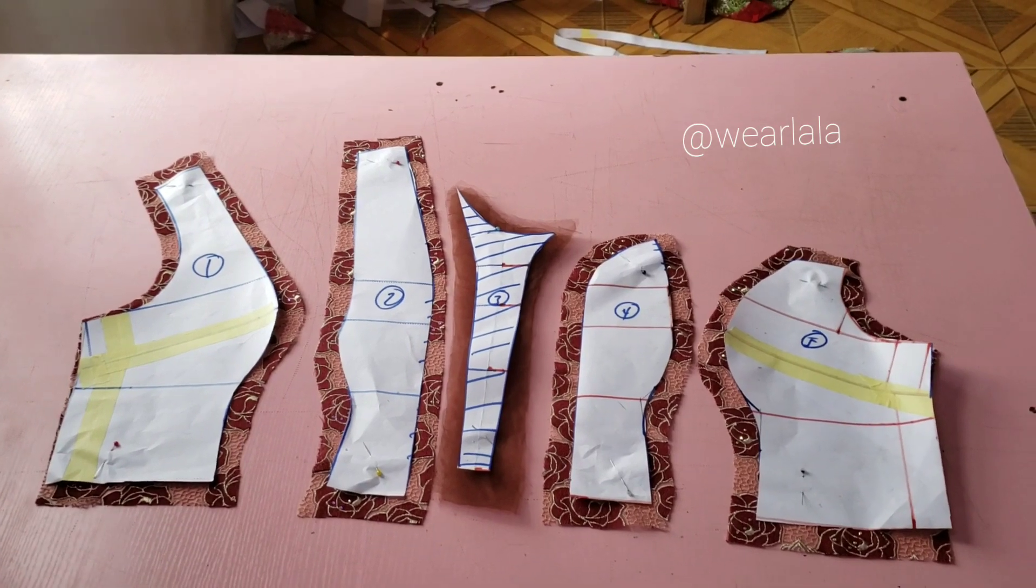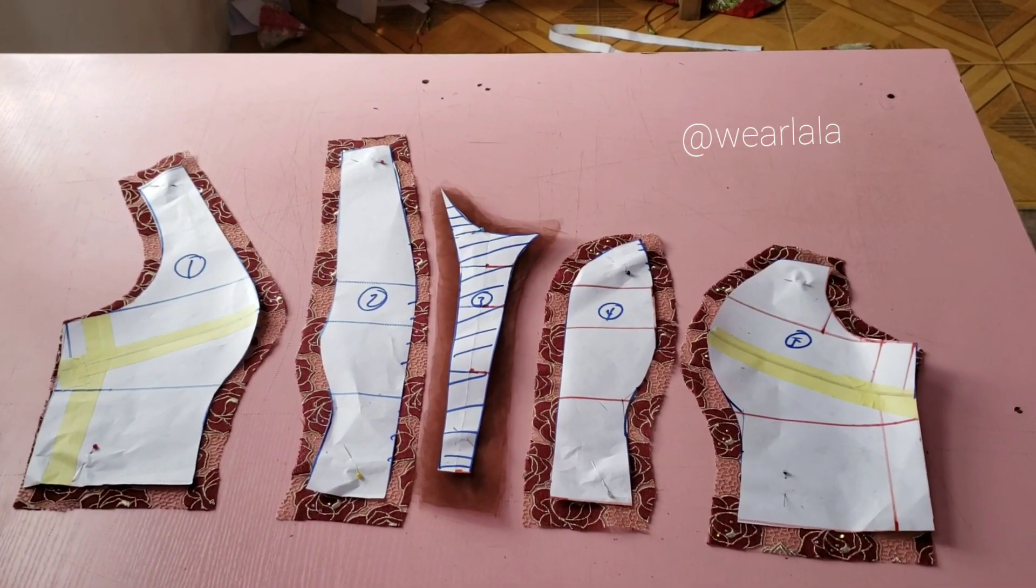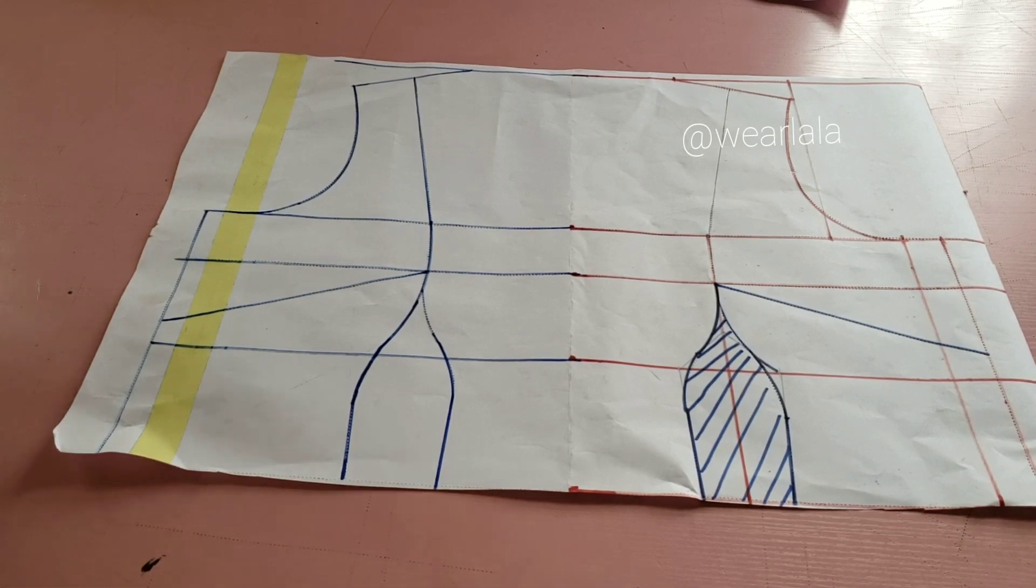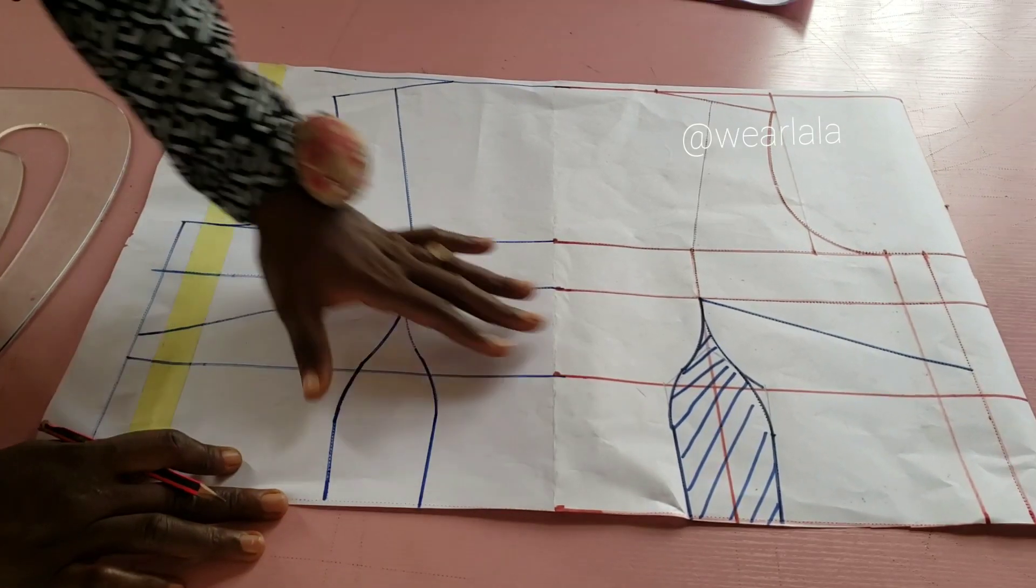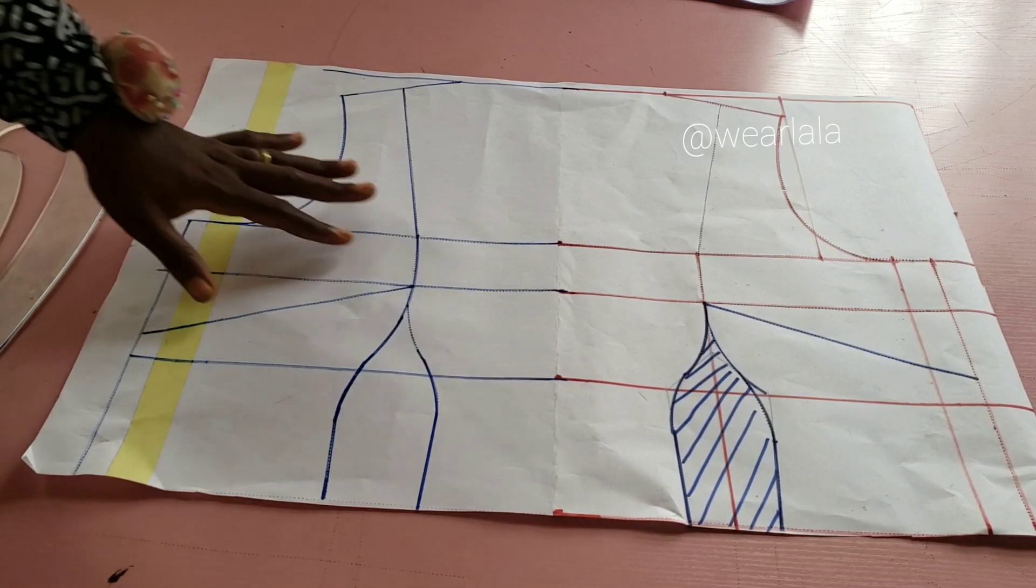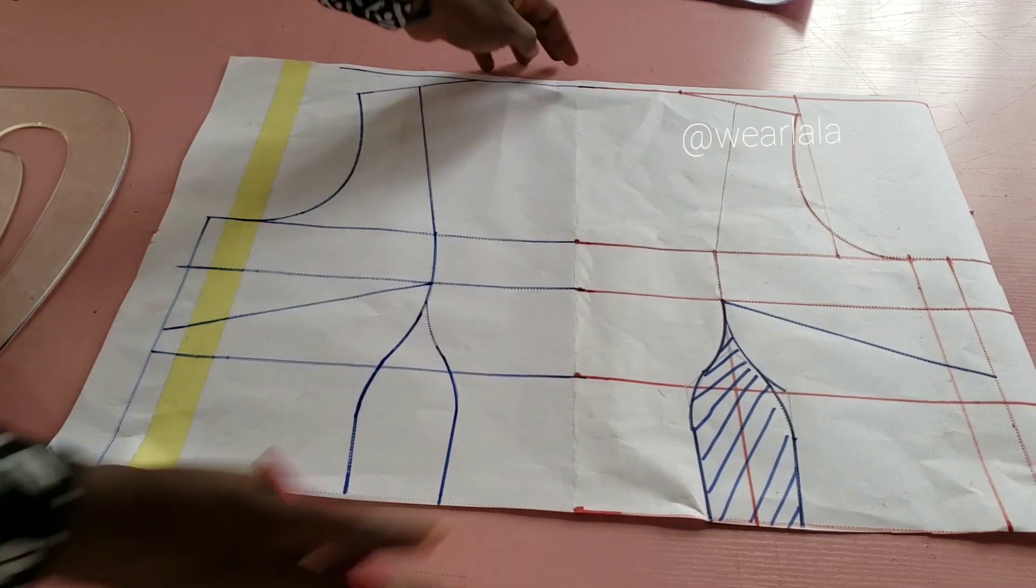So let's get started. This is my already cut out pattern here. I'll show you how I cut this on my pattern paper. First thing first, you need to know how to draft a basic bodice. This is my basic bodice pattern here. If you don't know how to draft a basic bodice, I'll drop the link to my previous tutorial here on YouTube and on our website.